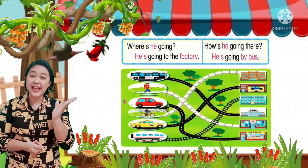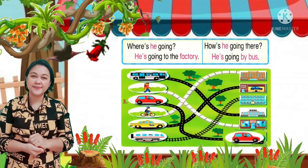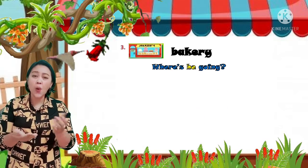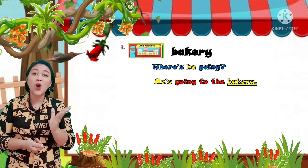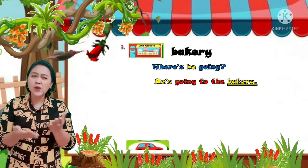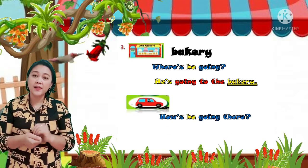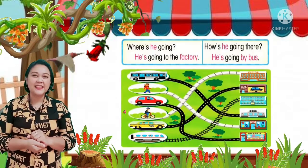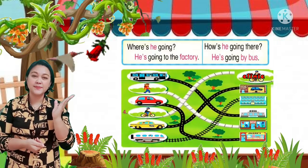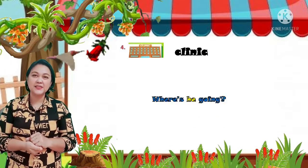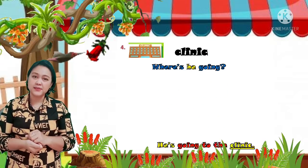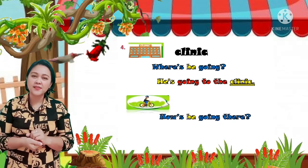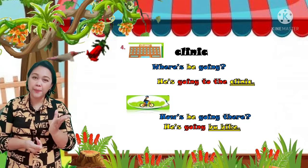Let's look at number 3. Bakery. Where's she going? He's going to the bakery. How's she going there? He's going by car. Number 4. Clinic. Where's she going? He's going to the clinic. How's she going there? He's going by bike.